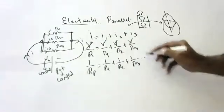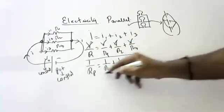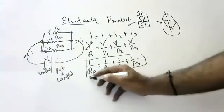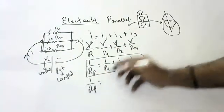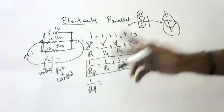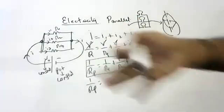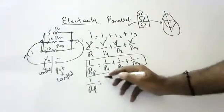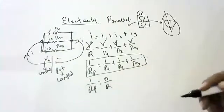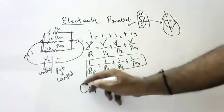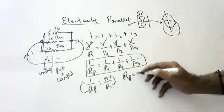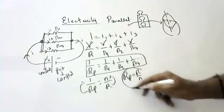You can extend this to any number of resistors. If all resistances have the same value R, then 1/R_parallel = N/R. Reversing both sides, the formula is: R_parallel = R/N. So if there is 1 resistor it is R, if 2 then R/2, if 10 then R/10, if 100 then R/100, and if N then R/N.